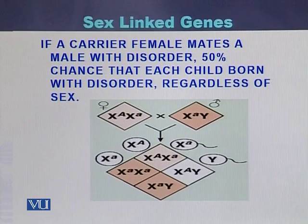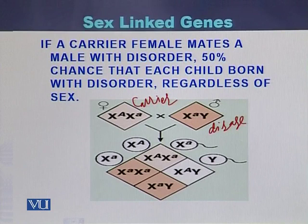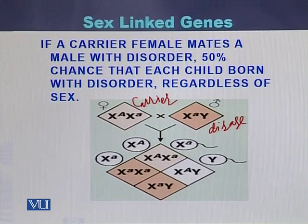The third example is when a carrier female mates with an affected male. In a cross between a carrier female and an affected male, each child born to this couple — regardless of sex — will have a chance of being affected with the disease, whether daughter or son.